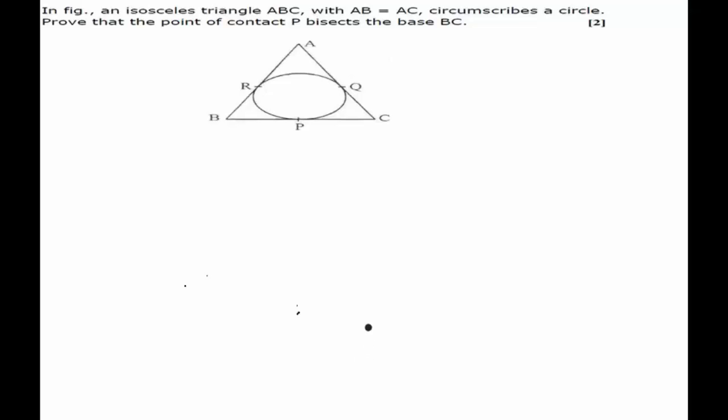Hello friends, in this question we are given an isosceles triangle ABC with AB equal to AC, and a circle which is inside this triangle.